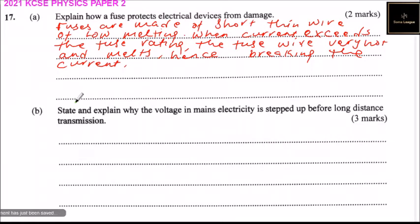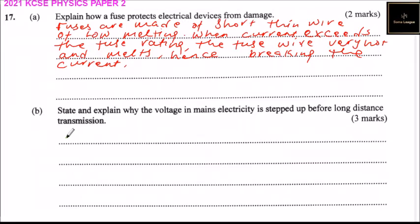You can also say excess current is converted to heat energy, which melts the fuse — which has a low melting point — hence breaking the circuit. Part B: state and explain why voltage in mains electricity is stepped up before long-distance transmission. Current makes the wires very hot, meaning there is loss of energy.